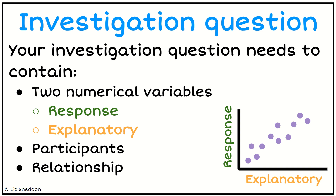I talk about the difference between these in another video. We also need to refer to the participants — who is it that we've got the data on? Who have we collected data from? It's different from the sample to population that we had with the comparisons, and we're going to focus on the participants: who are they? We also need that word 'relationship' because we're looking for a relationship between these two variables.